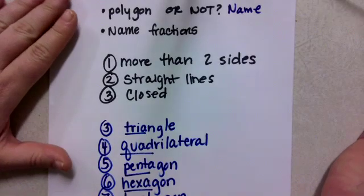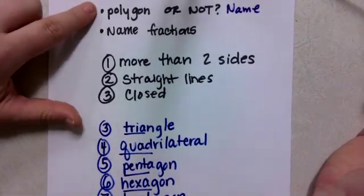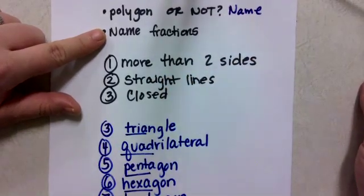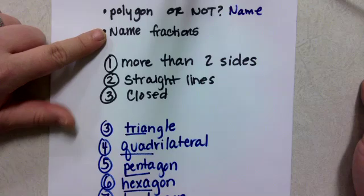Today's third grade small group is a culmination of earlier in the week. You're going to focus on polygon or not with naming shapes and also naming fractions. Students should hopefully be independent on this today or close to it.